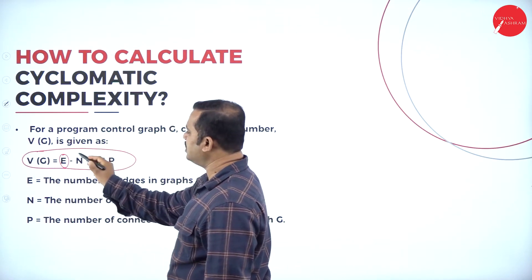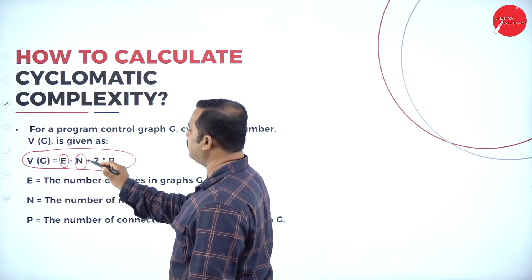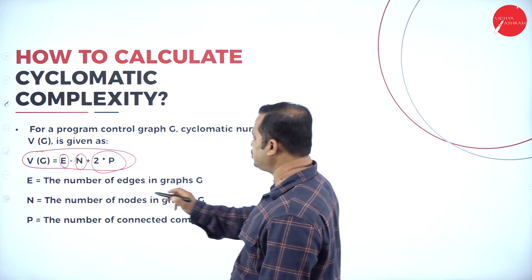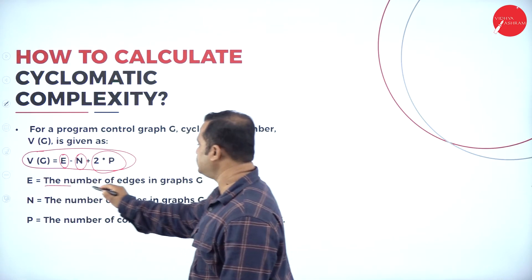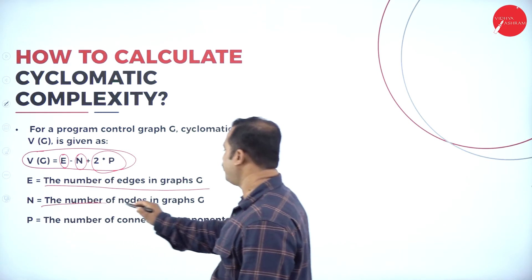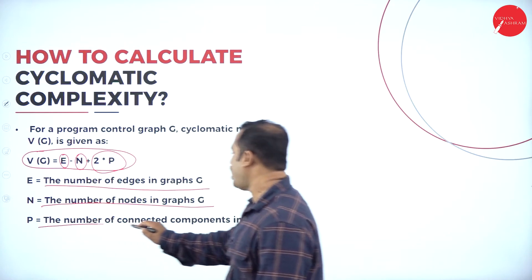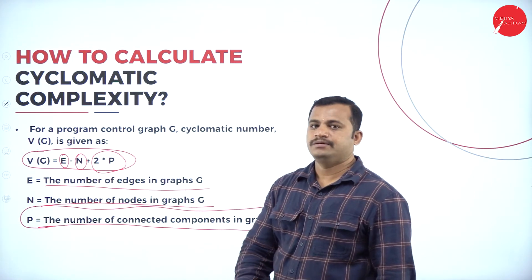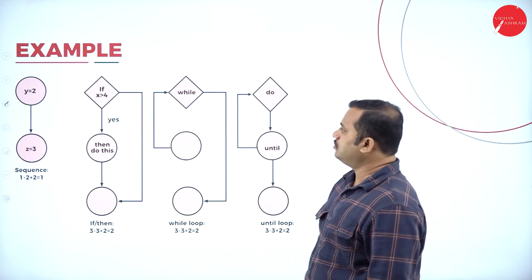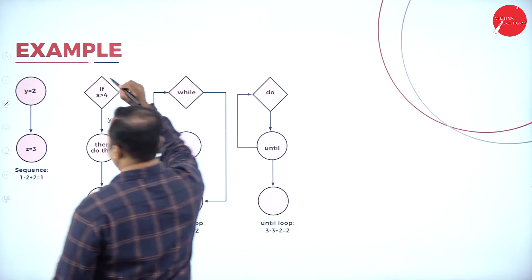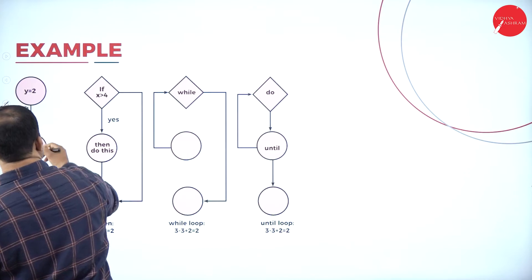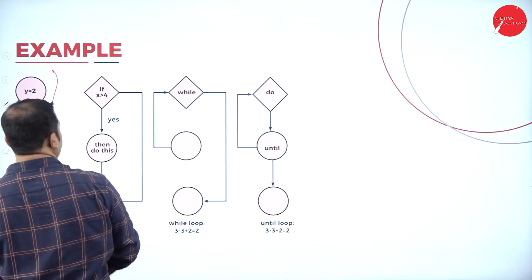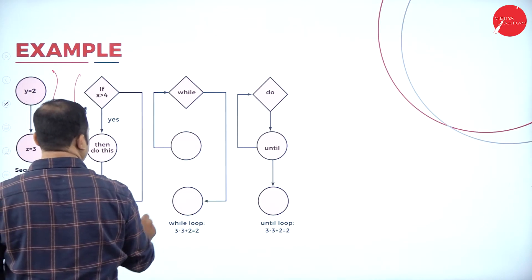In the formula, E represents the edges, N represents the number of nodes, and P represents the paths connected in a graph G — so V(G) = E - N + 2P. Looking at an example, we have one sequence of instructions: y = 2, z = 3 as sequential equations, followed by an if condition.